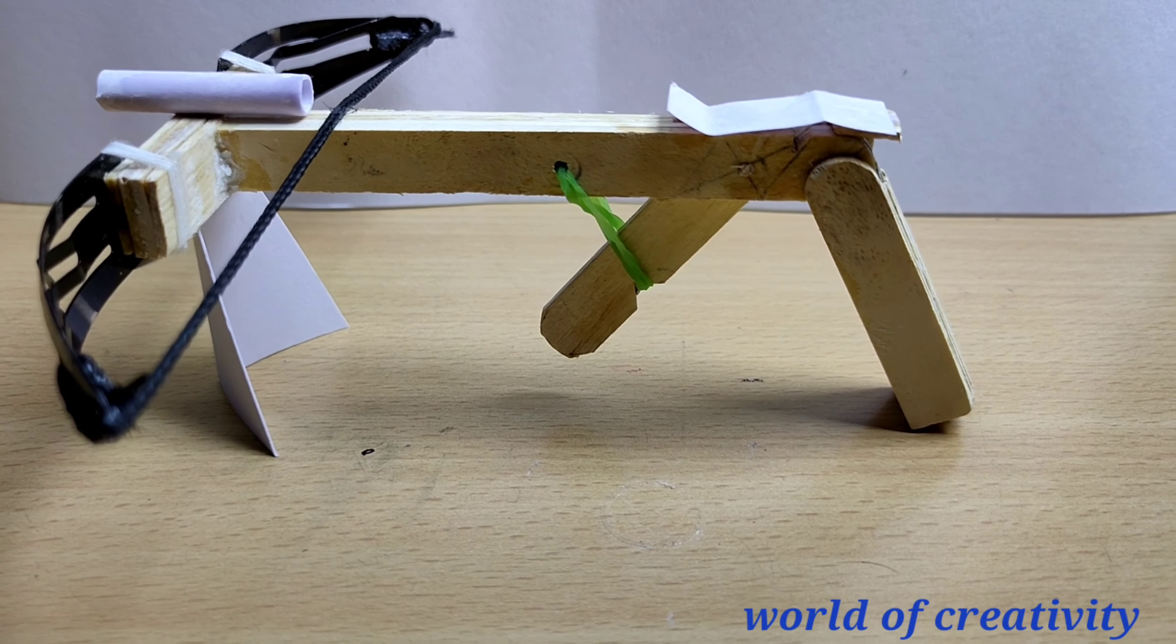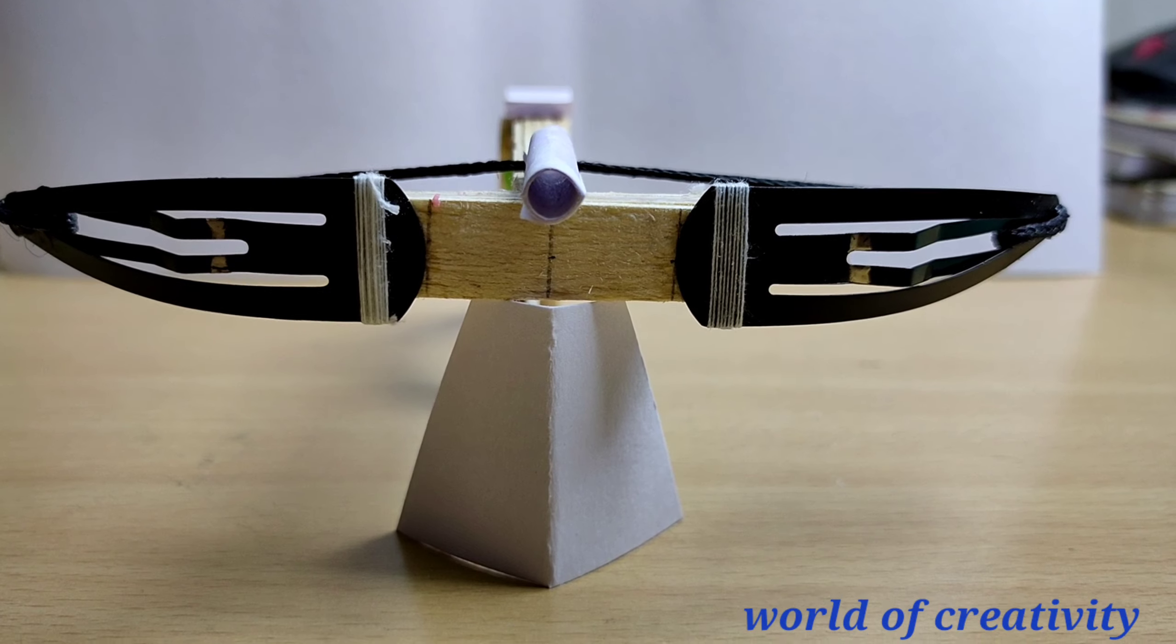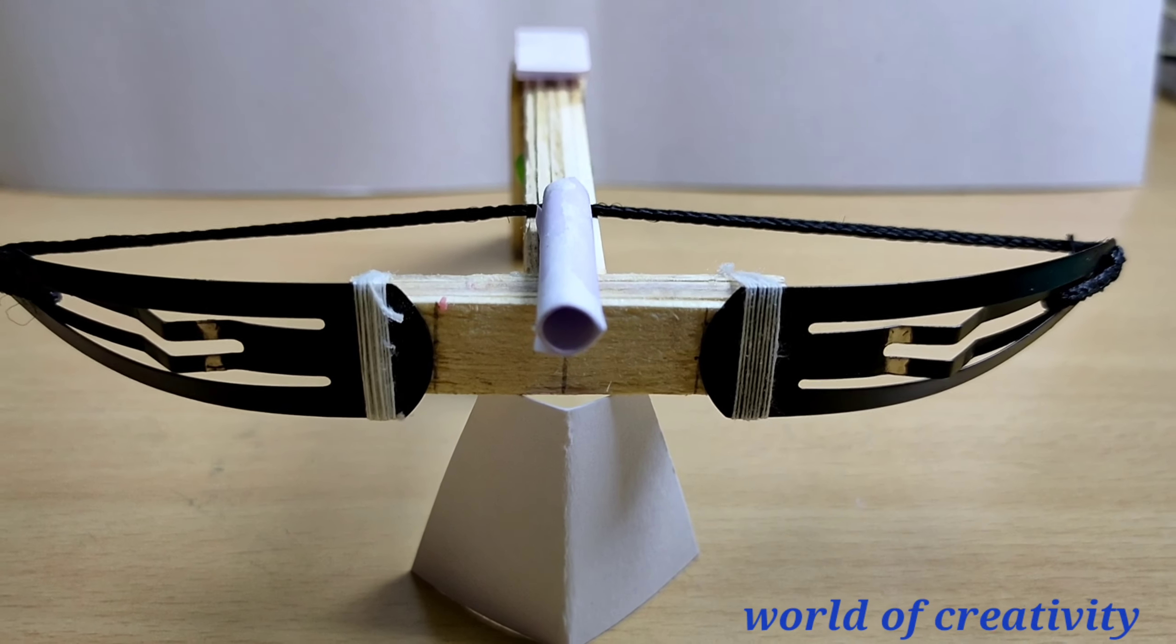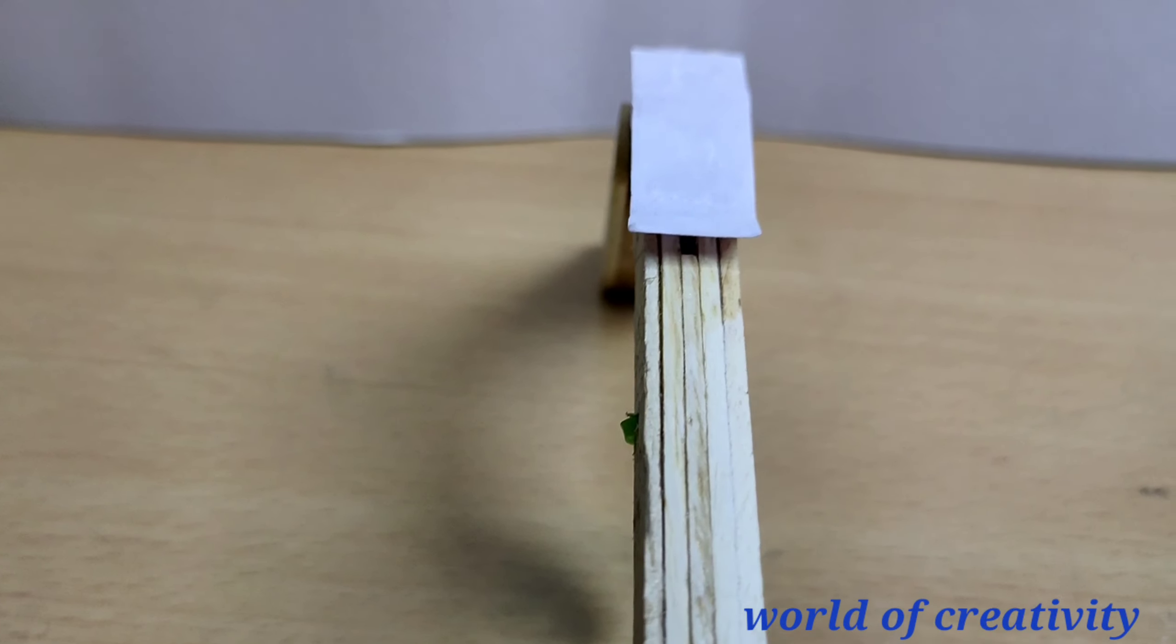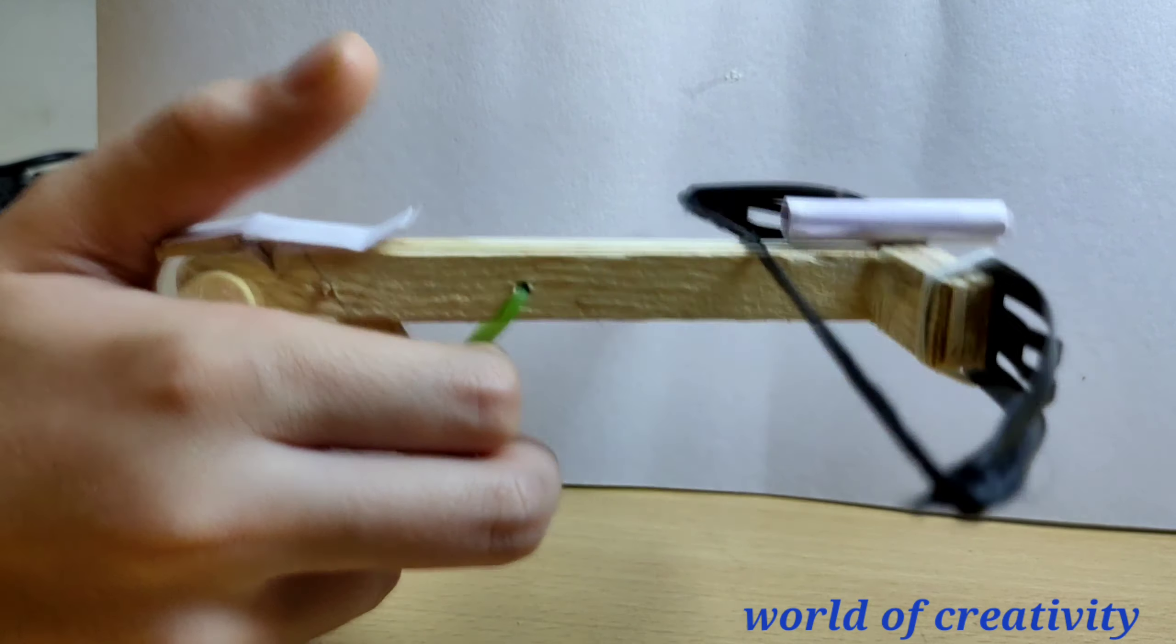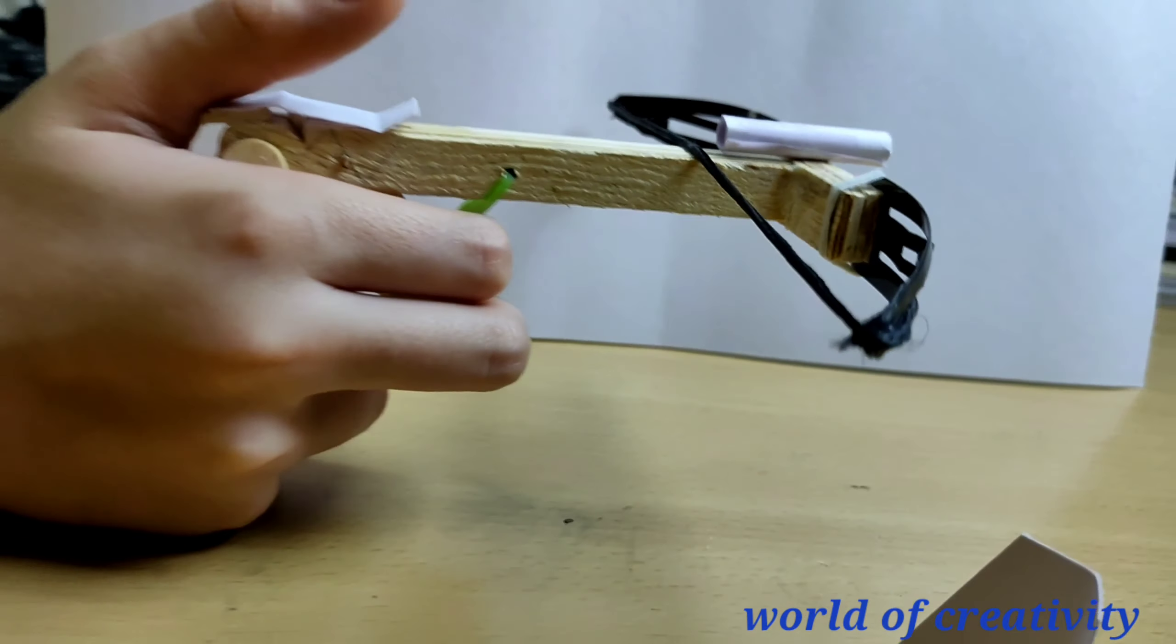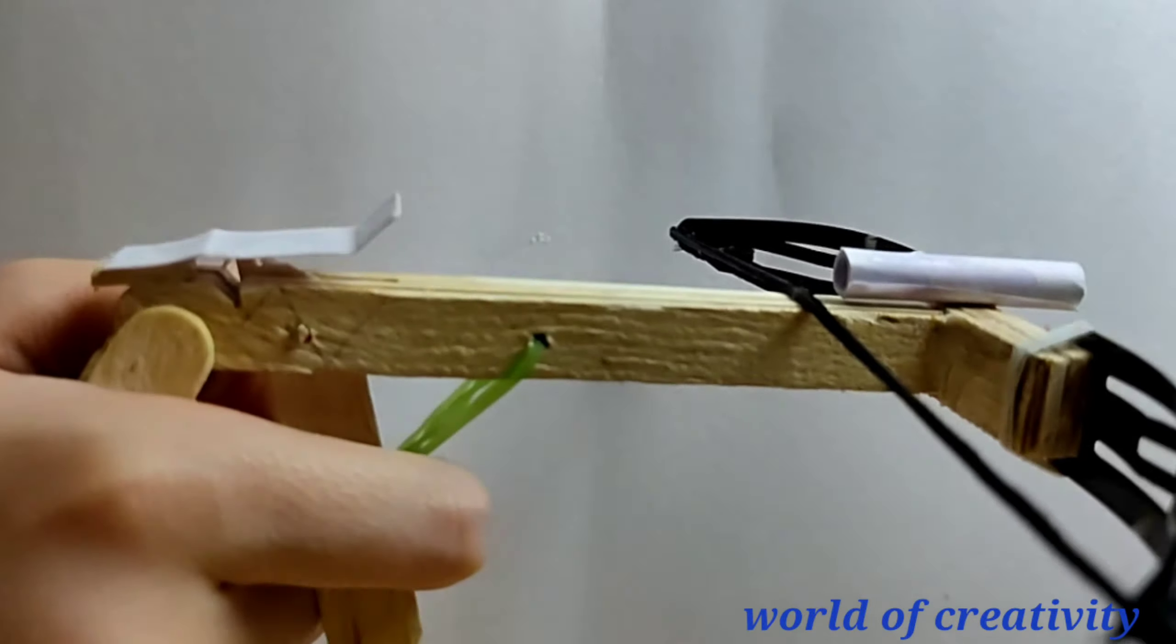This is how our crossbow looks. If you want, you can paint it. So this is how it shoots in slow motion.